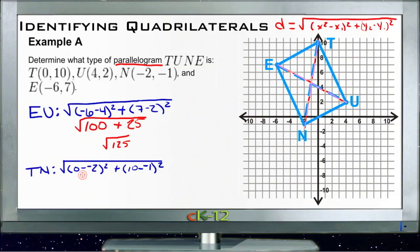Then TN is 0 minus negative 2, that's 2, squared would be 4, plus 10 minus negative 1, that's 11, squared would be 121. So that gives us square root of 125. So our two diagonals are indeed equal. So this is a rectangle, so we know that these meet here at 90 degree angles. The question then is, are these other two sides the same?